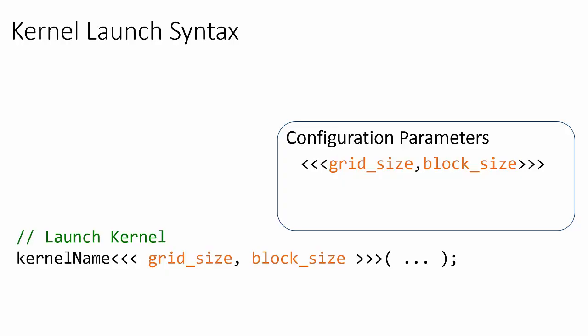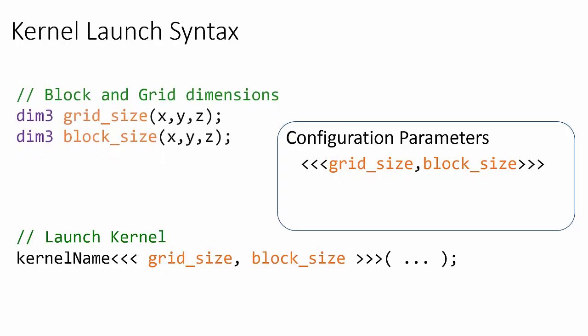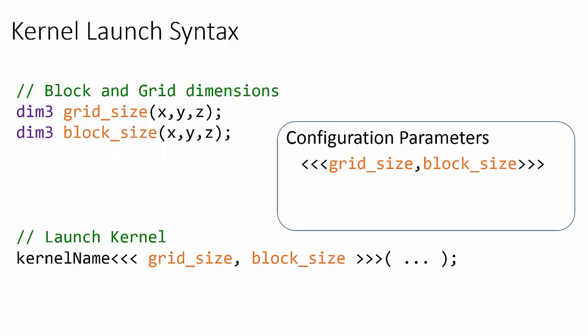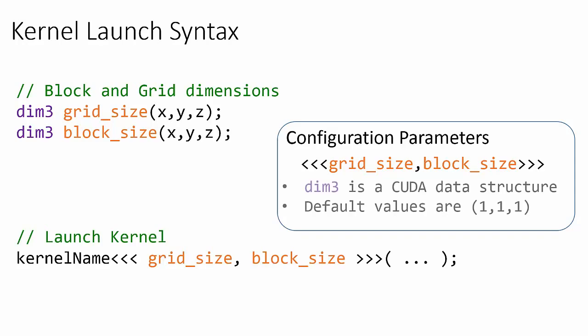Before we launch a kernel we need to configure its launch parameters. These configuration parameters define the grid and block dimensions. The values of x, y, and z in the parentheses are integer values. Dim3 is a CUDA data structure that is simply a set of integers corresponding to the size of the x, y, and z dimensions. In the code shown, grid_size and block_size are the dim3 data structure variable names.